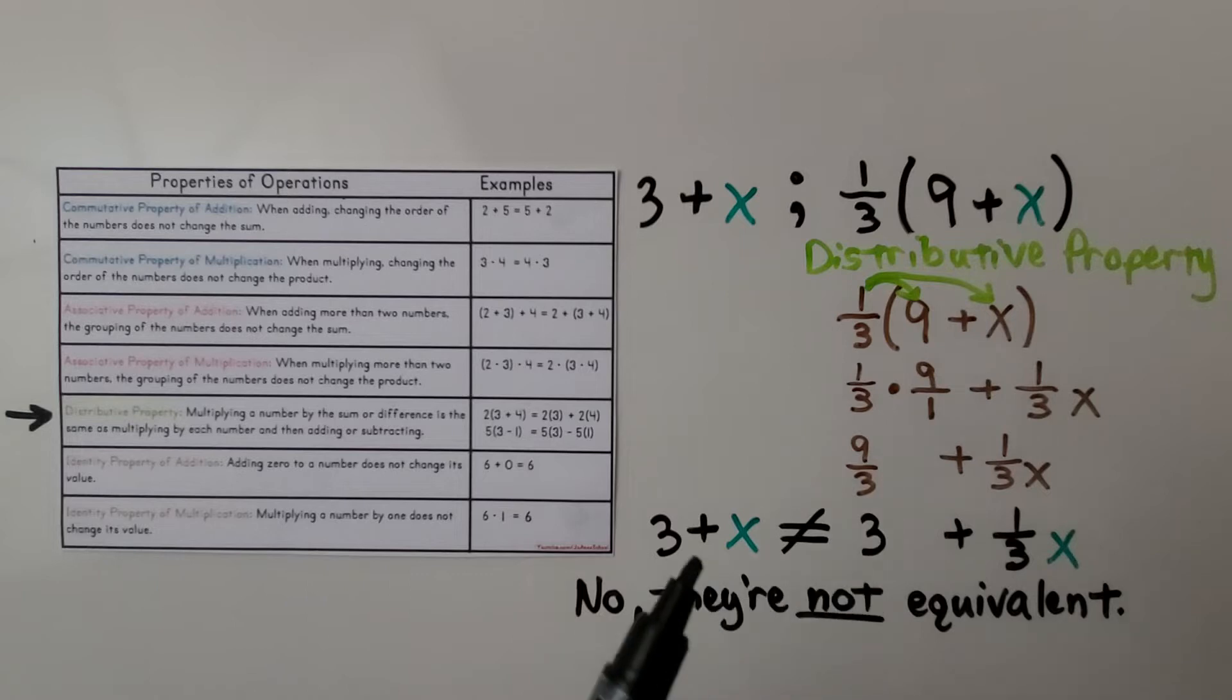So no, 3 plus x is not equal to 3 plus 1/3 x. So no, they're not equivalent. We had to use the distributive property on this expression to find out.